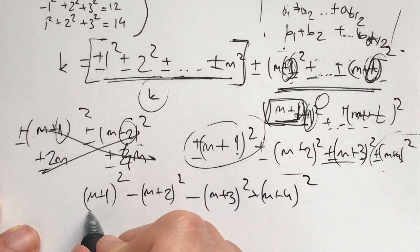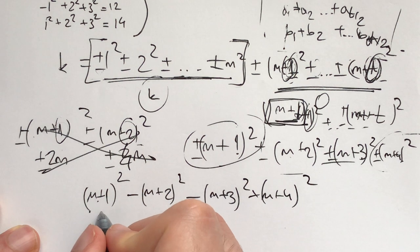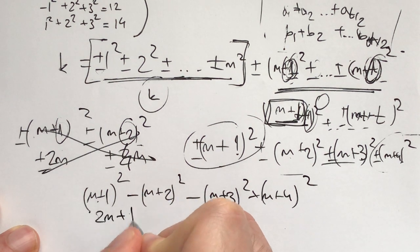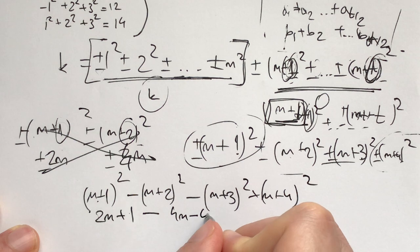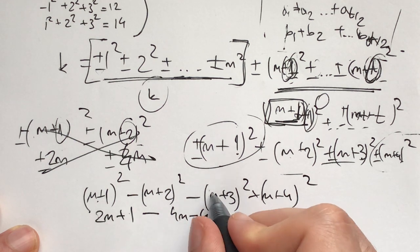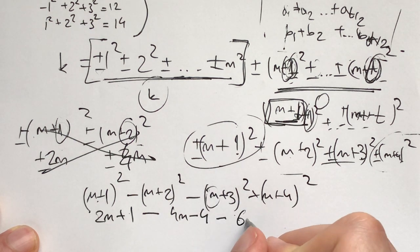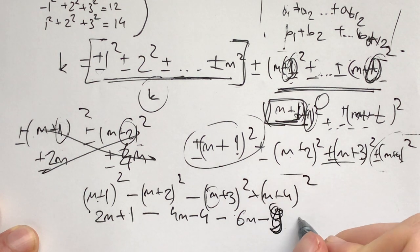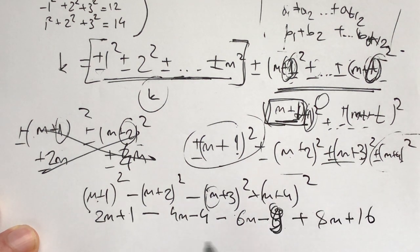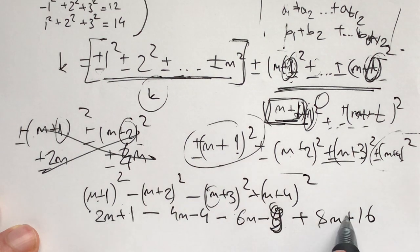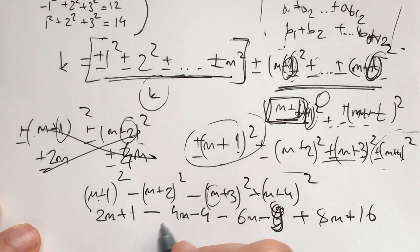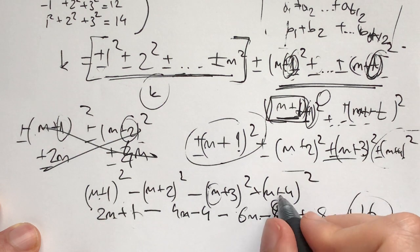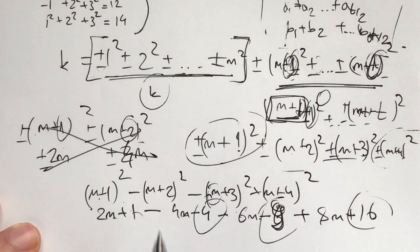Now what is this equal to? Well, the m² cancel out. We're going to have 2m+1 minus 4m-4 minus 6m-9 plus 8m+16. And what we're left with is the m's cancel out. This is 10, this is negative 10m, and we're left with 1+16-9-4. And what is that? That is equal to 4.